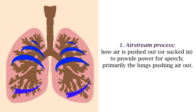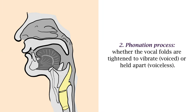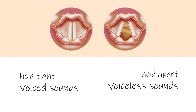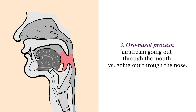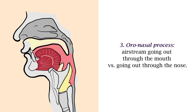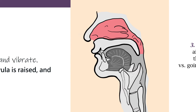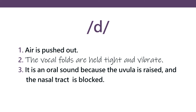For every sound you must clarify the airstream process. The second step is the phonation process — the voicing process: are the vocal folds tightened to vibrate, or held apart? The first case gives you a voiced sound; the second gives you a voiceless sound. For the sound 'd', the airstream process is pushing air out of the lungs, and the phonation process is holding the vocal folds tight so they vibrate — it is a voiced sound. The third process is whether the air goes out through the mouth or the nose: is the uvula raised to block the nasal cavity, or lowered? For 'd', the uvula is raised and the nasal tract is blocked — it is an oral sound, not a nasal sound.